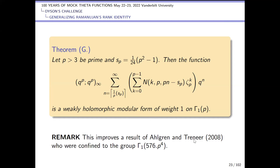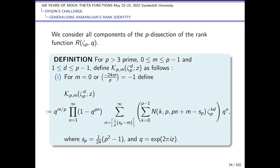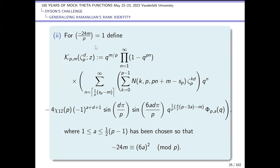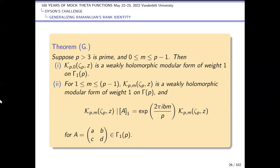We also look at other parts of the p-dissection. It depends on the character of minus 24m mod p: when it's zero or a quadratic non-residue we look at this function here; when it's a quadratic residue we need to subtract off one of these phi functions. The value a is chosen so that this is true, and the theorem is that for the special case k_p,0 — already stated for the other residue classes — it's a modular form of weight 1 on Gamma(p) but it also transforms nicely on Gamma_1(p).